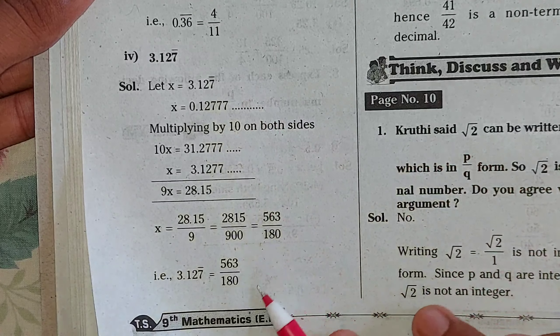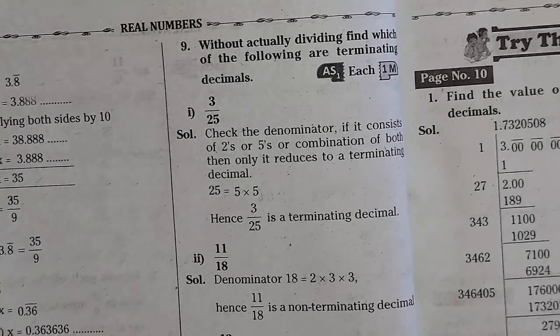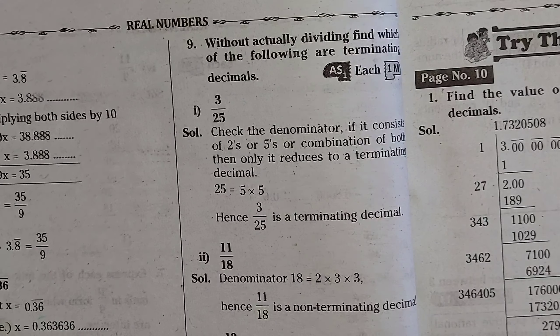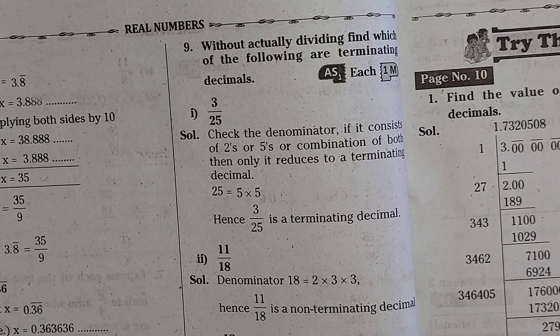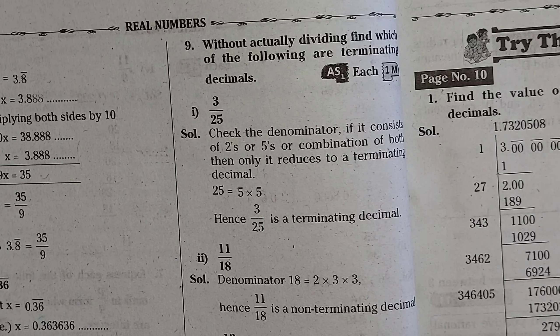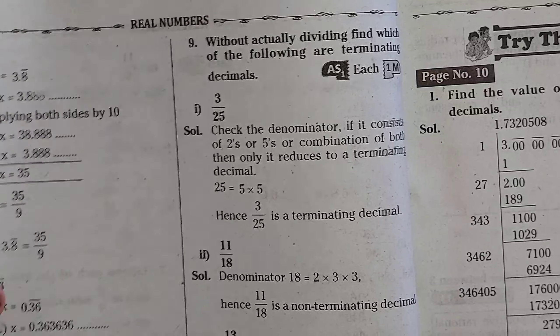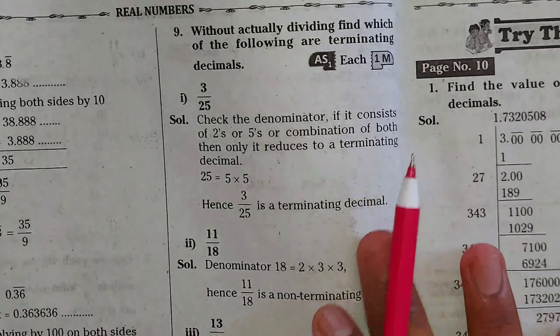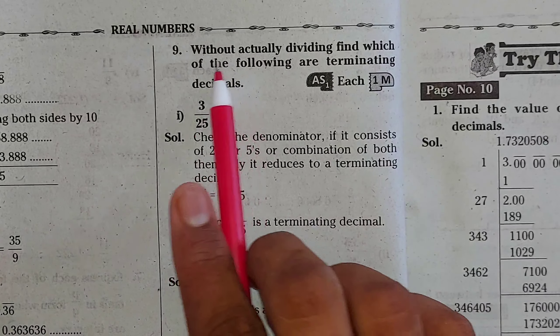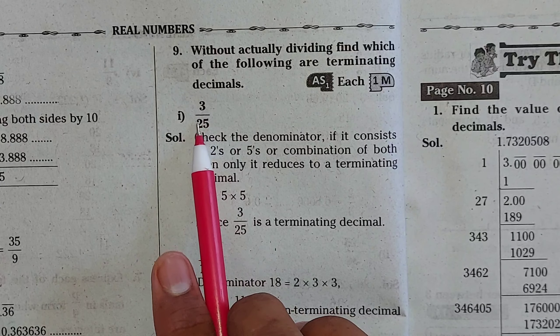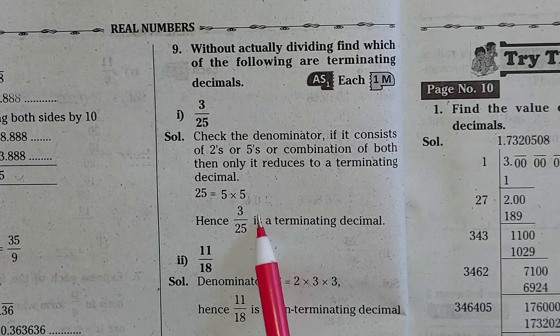After that, the ninth bit of Exercise 1.1 has four questions. First question and answer, second question and answer, third question and answer, and fourth question and answer. You can see in the i-button the ninth class Maths subject playlist — please check it out.